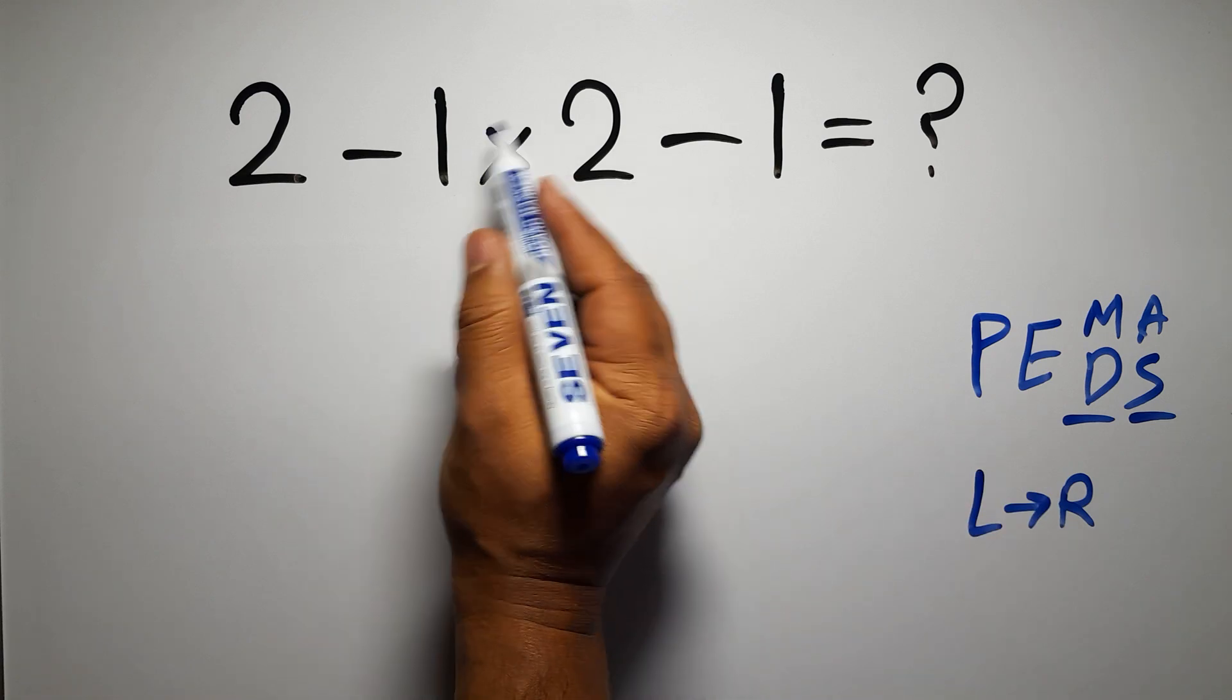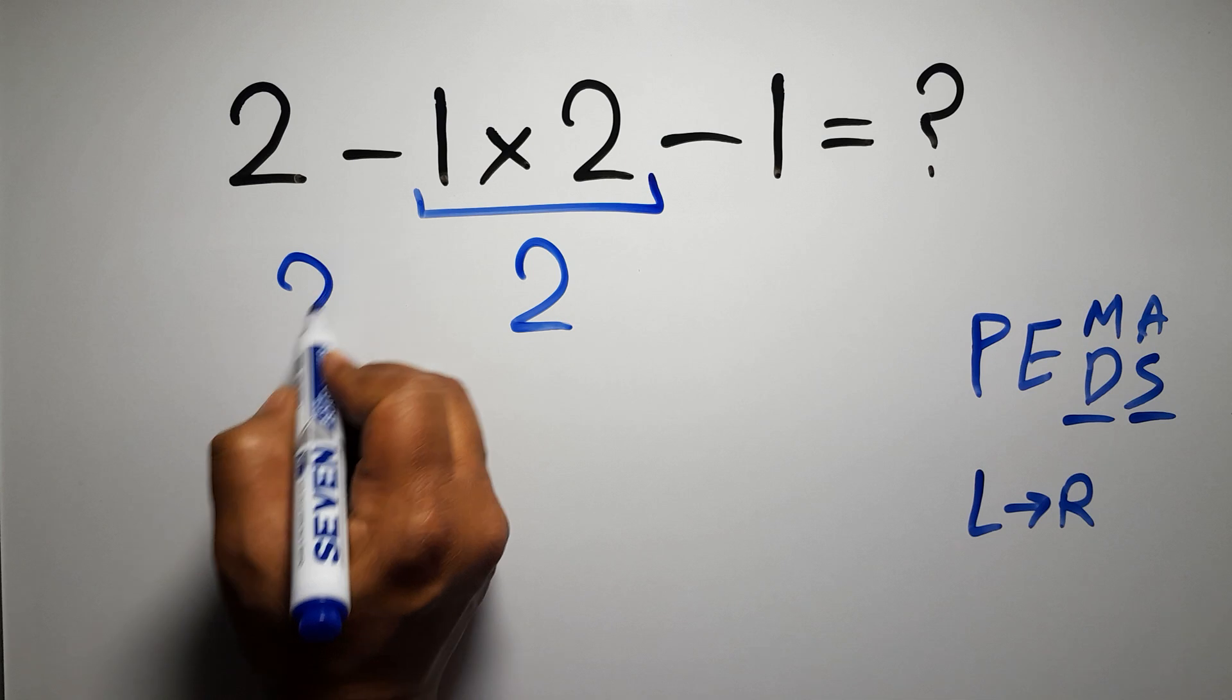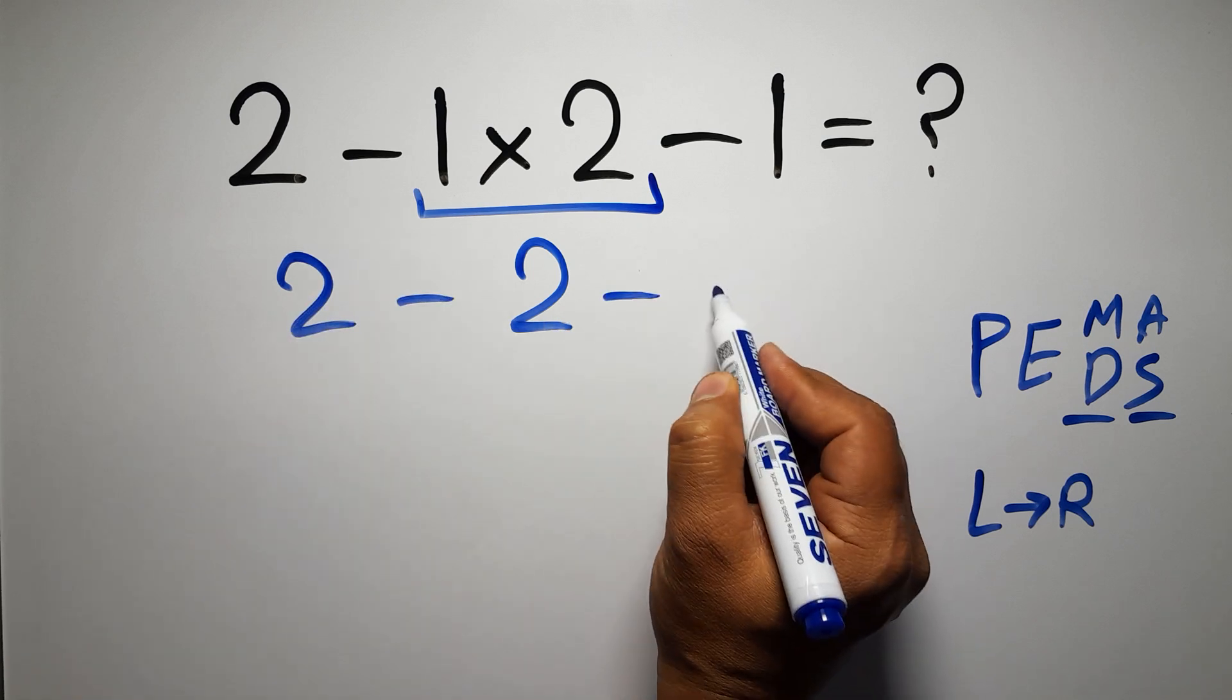So first this multiplication, 1 times 2 gives us 2, so 2 minus 2 minus 1.